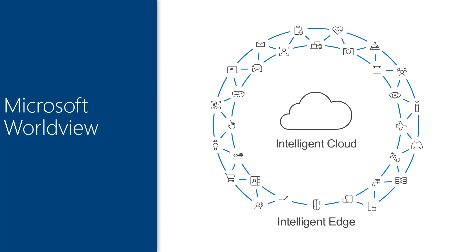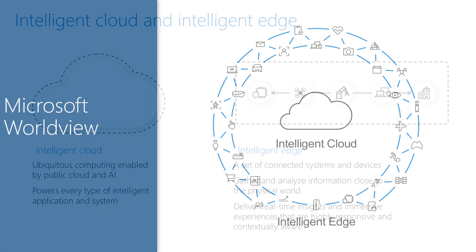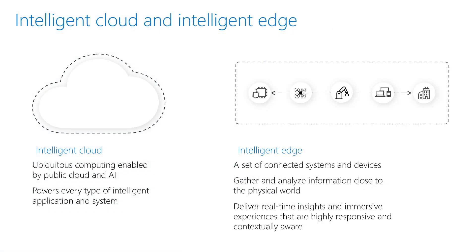Let's take a look at the intelligent cloud and intelligent edge ecosystem. An intelligent cloud is a cloud platform that enables ubiquitous computing by public cloud and AI, powering every type of intelligent application and system. An intelligent edge is a set of connected devices and systems that can gather and analyze information close to the physical world, delivering real-time insights and immersive experiences that are highly responsive and contextually aware. Think about all the drones, smartphones, and smartwatches in your household — all of these devices can emit data to the intelligent edge.